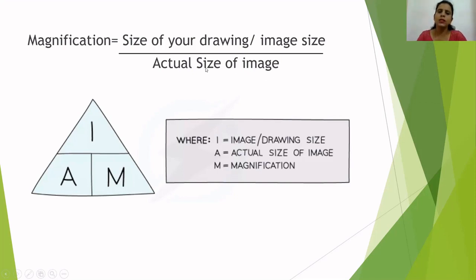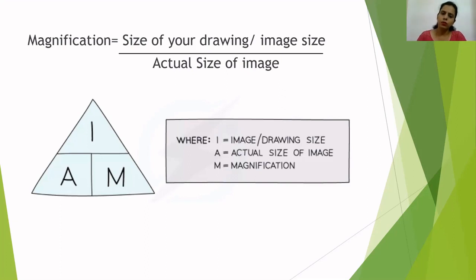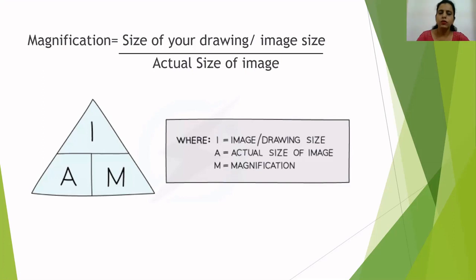Sometimes in the question paper the actual size of the image is given, and you just have to draw the diagram and measure it. When you measure the diagram, the most convenient unit is millimeters — you use a ruler and measure in millimeters. But when the question asks you to calculate magnification in micrometers, you still measure in millimeters first, then convert millimeters into micrometers.